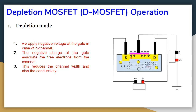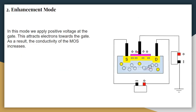As the negative charge at the gate repels electrons in the built-in channel, those electrons move away from the gate, creating more holes between the source and drain. As more negative voltage is applied, more electrons move away, and eventually the depletion region becomes so large that no current flows between the drain and the source. This means we control the conductivity of the channel by applying the gate potential. If no potential is applied at the gate, electrons still flow between the source and the drain since the channel already exists.